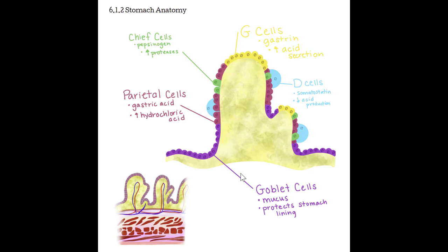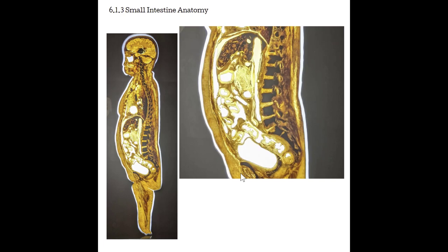Moving to the small intestine anatomy. The small intestine is a long coiled tube, about 5 meters long and only 4 centimeters in diameter. The small intestine is attached to the posterior abdominal wall by something called the mesentery — folds of peritoneum that house the small intestine and anchor it back to the abdominal wall.